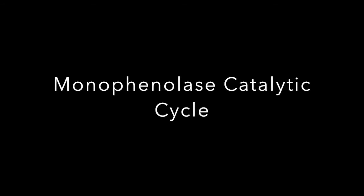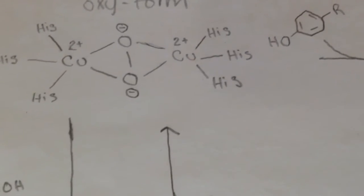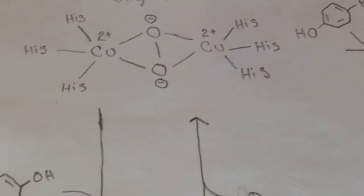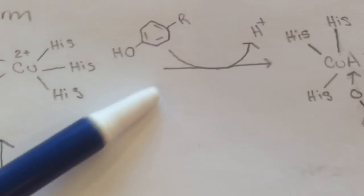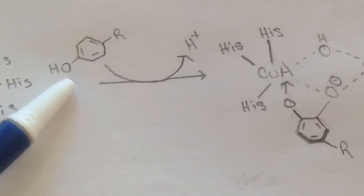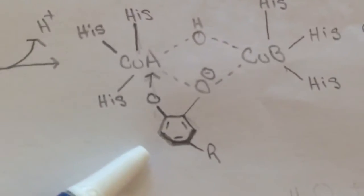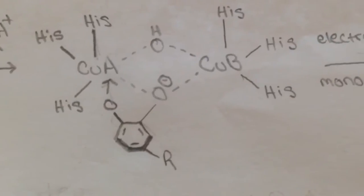The most important function of tyrosinase is converting L-tyrosine to dopaquinone during melanin biosynthesis. This reaction, also known as the monophenylase catalytic cycle, occurs via the oxytyrosinase form, which oxidizes phenols into orthoquinones. This reaction begins with the oxygen of a monophenol compound, such as L-tyrosine, binding to copper A. The phenol ring then undergoes electrophilic monooxygenation so that it forms a second bond with one of the oxygens within the active site.